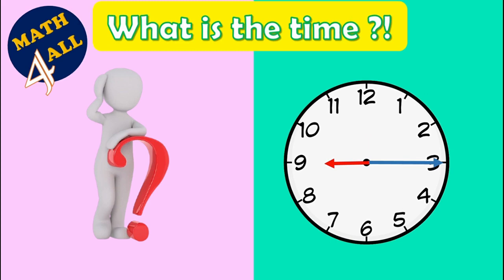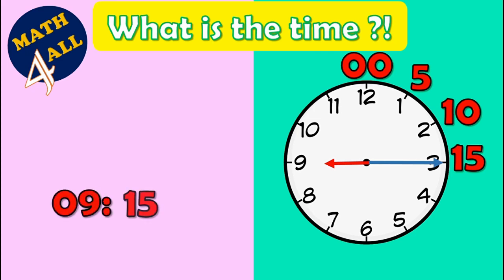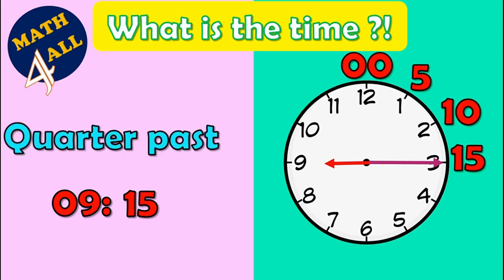Can you help me? Here the short hand, or the hours hand, is on nine, so it's nine. And the long hand, or the minutes hand, is on three, so it's fifteen minutes. It's nine fifteen, or quarter past nine. When you see the long hand on three, it's quarter past.